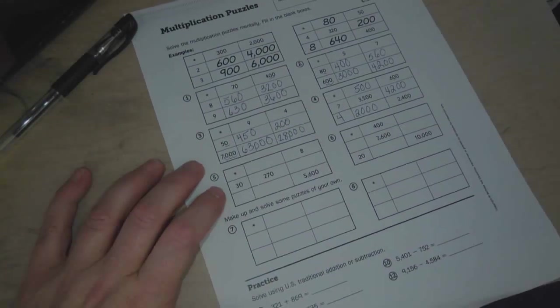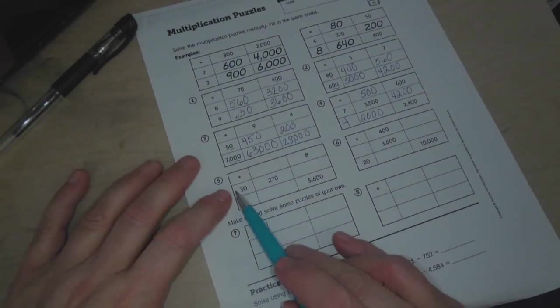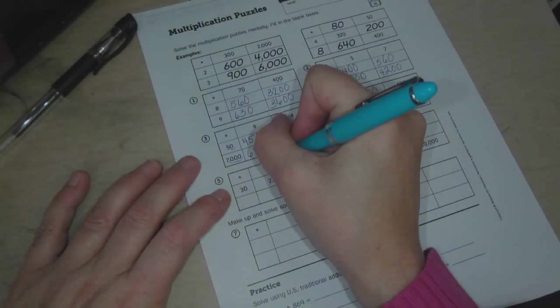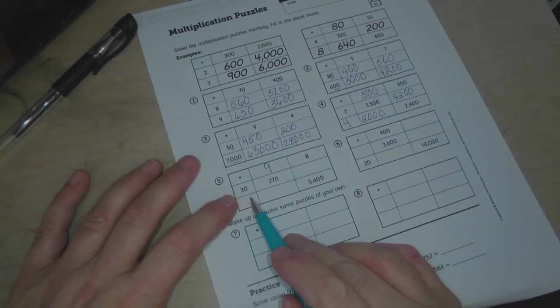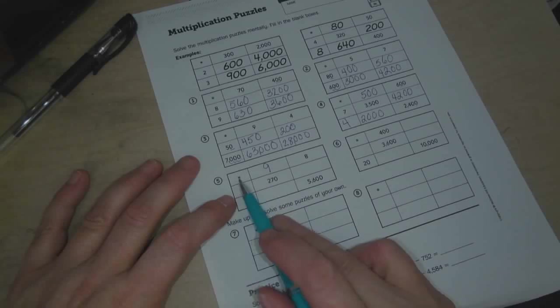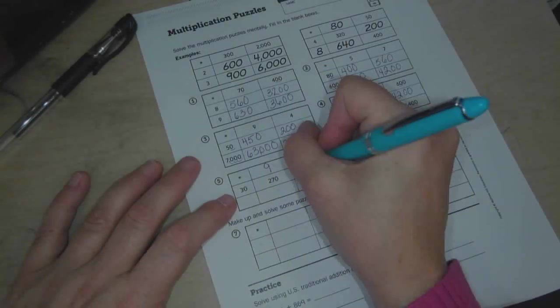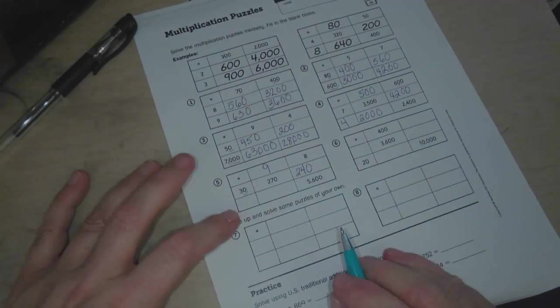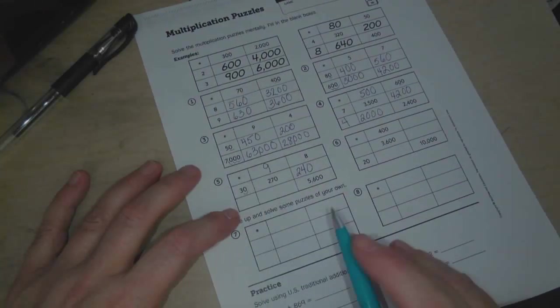So then over here, 3 times what equals 27? 9. And then we already have the zero here, so we don't need to put a zero there. 30 times 8. Well, 3 times 8 is 24, and there's a zero, so we put the zero there.